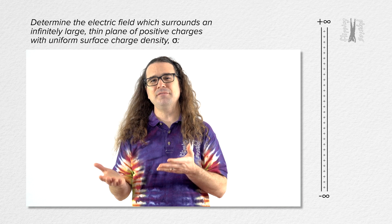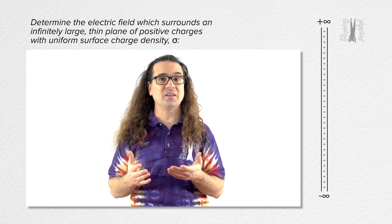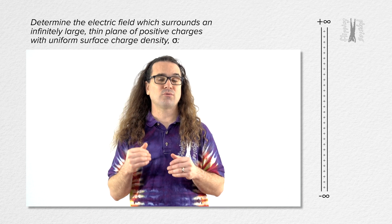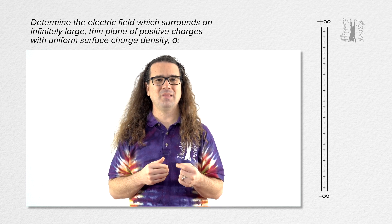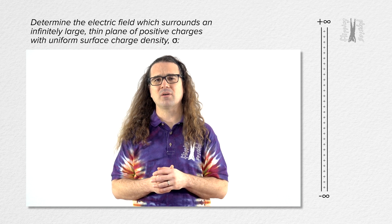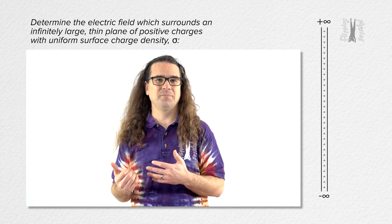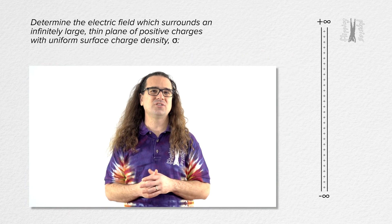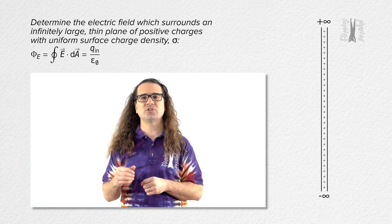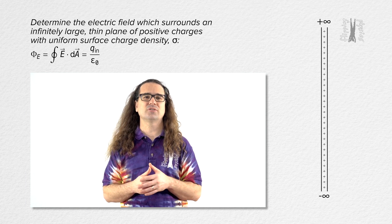Basically, we have an infinitely large, infinitesimally thin, two-dimensional plane of positive charges which are evenly spread out through the infinite plane. It's like a really, really large sheet of paper with a uniform positive charge per unit area. And our job is to use Gauss's law to determine the electric field which surrounds and is caused by the infinite plane of positive charges.